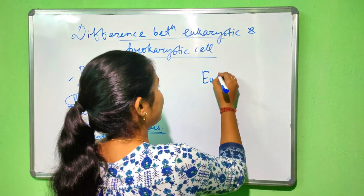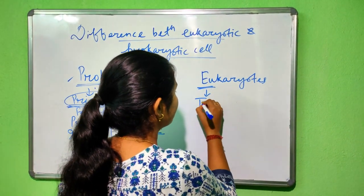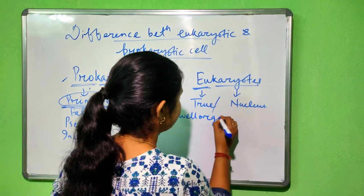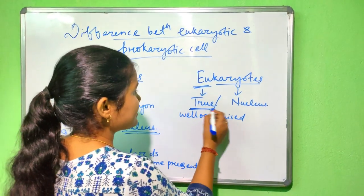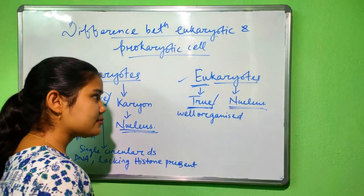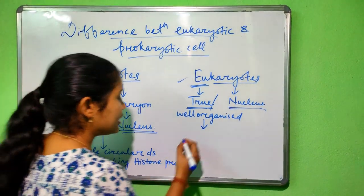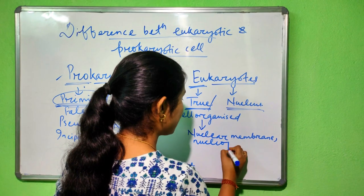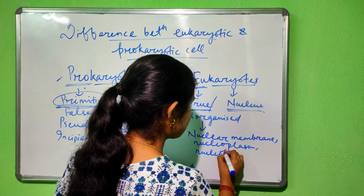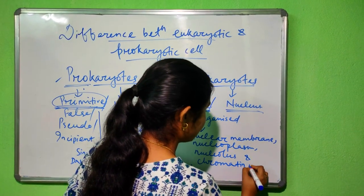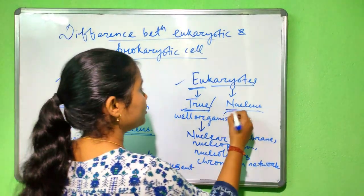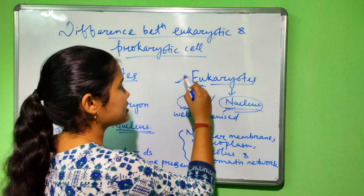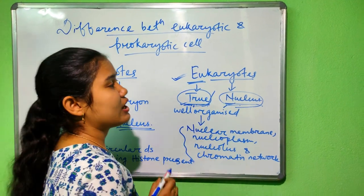Now, what is a eukaryote? 'Eu' means true and 'karyon' means nucleus — true or well-organized. So, the cell or organism which has a true nucleus is called a eukaryotic organism or eukaryote. A true nucleus has a nuclear membrane, nucleoplasm, nucleolus, and chromatin network. The cell which contains a true nucleus is called a eukaryotic cell.